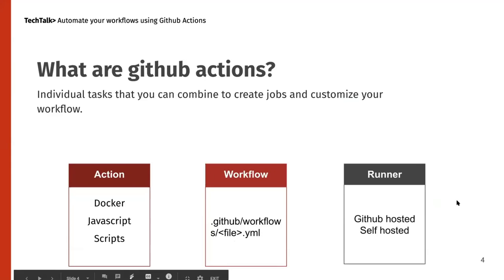We also have runners. Currently there are GitHub-hosted runners and self-hosted runners. GitHub-hosted runners provide 2,000 minutes of free action minutes for individual accounts, and if you need more you can pay. Self-hosted runners are for when you have your own infrastructure or data center — you can download these runners onto your machine and run actions on your own infrastructure.